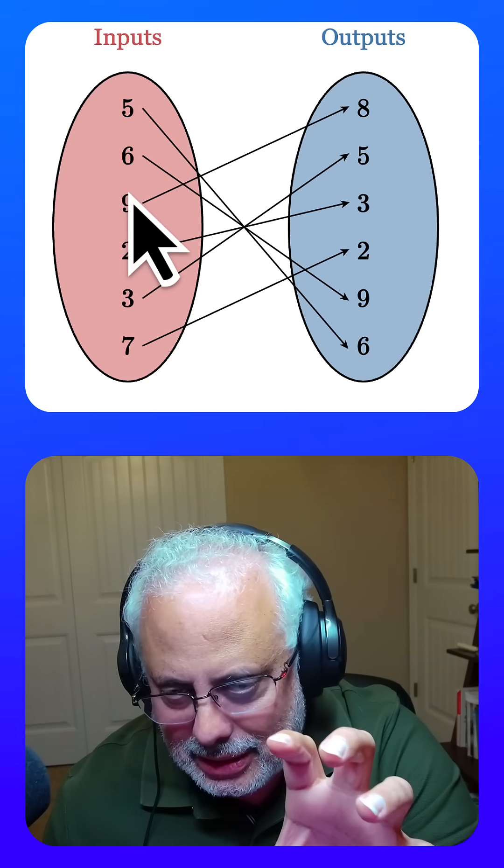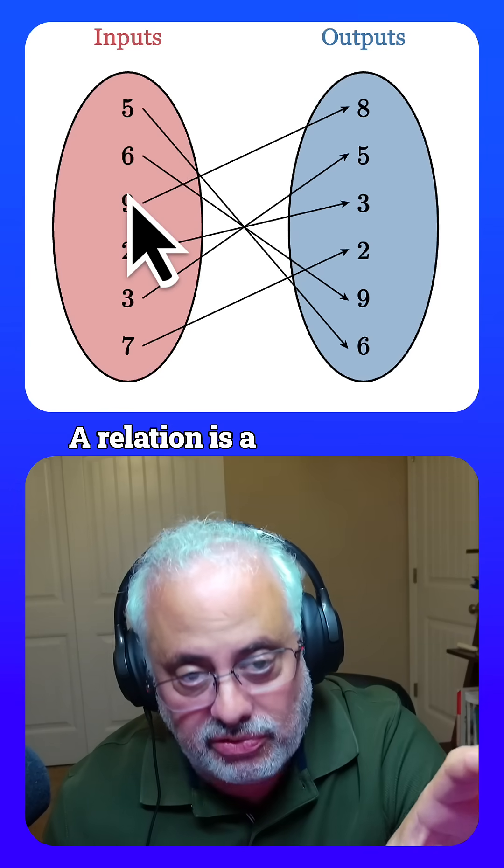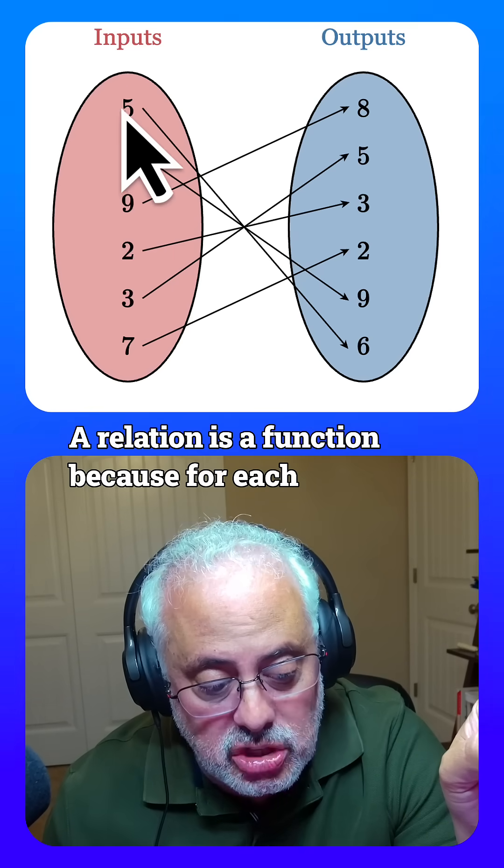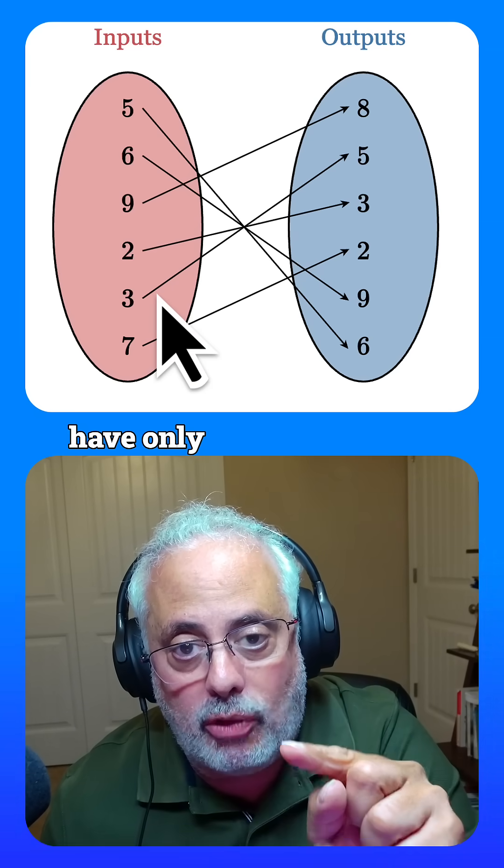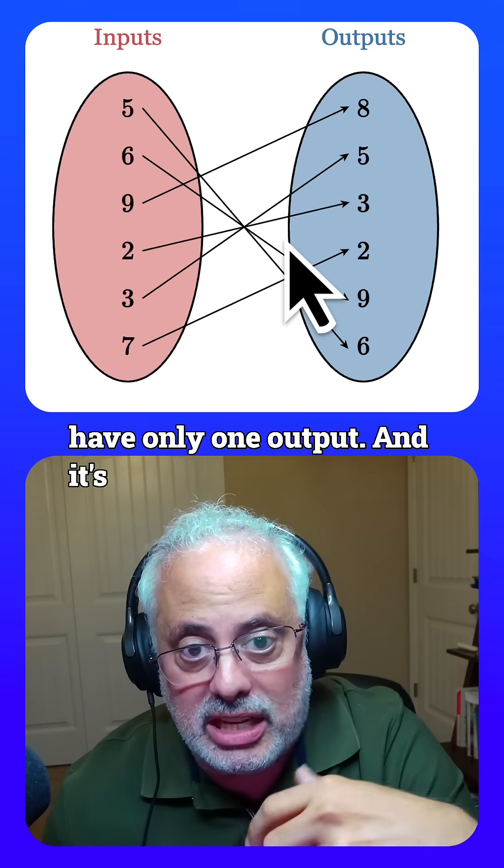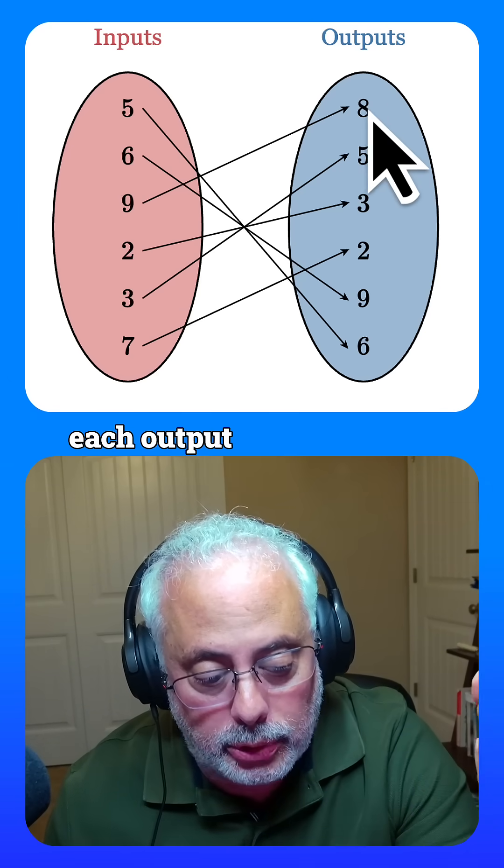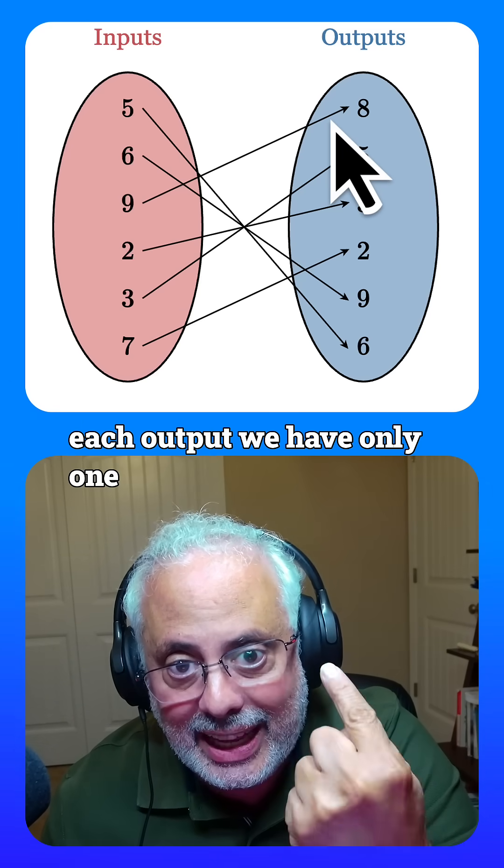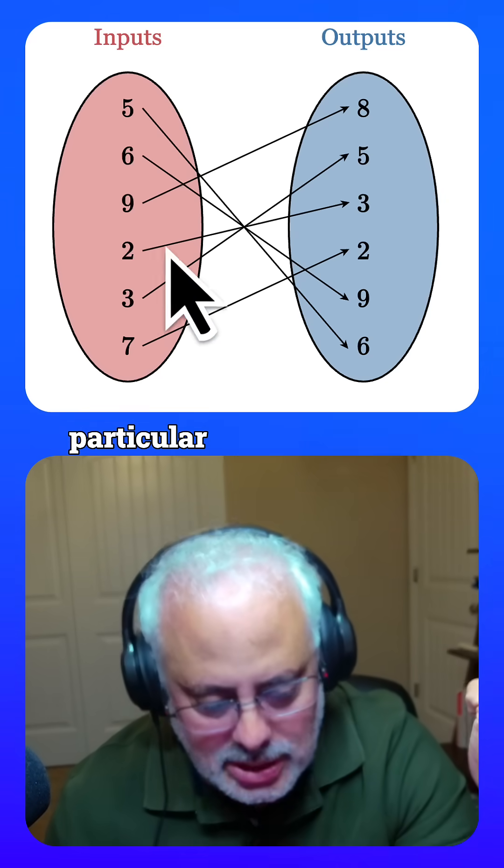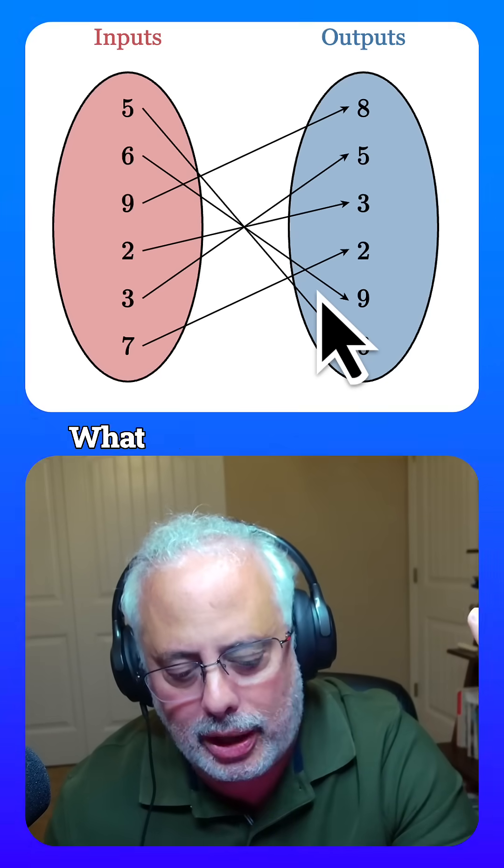Very interesting. A relation is a function because for each input we have only one output. And it's invertible because for each output we have only one input in this particular question. What do you think?